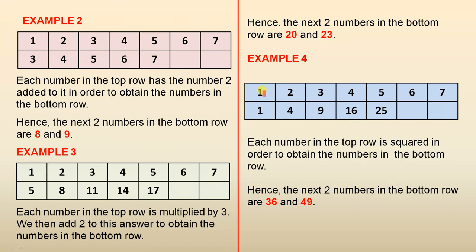Example 4: here we have the top numbers and here are the first five. Each number in the top row is squared in order to obtain the numbers in the bottom row. 1 squared is 1, 2 squared is 4, 3 squared is 9, 4 squared is 16, 5 squared is 25. So 6 squared is 36 and 7 squared is 49. Hence, the next two numbers in the bottom row are 36 and 49.